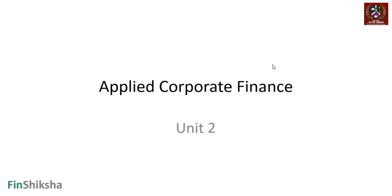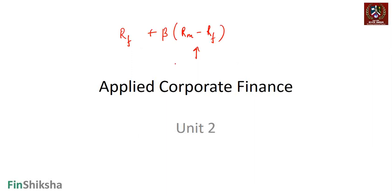We continue with our discussion on applied corporate finance unit 2, where we were discussing hurdle rates and the capital asset pricing model CAPM. We have already covered the first part, which is the risk-free rate. Now we are supposed to find out what is the beta, but in this particular video we're going to look at what is the equity risk premium.